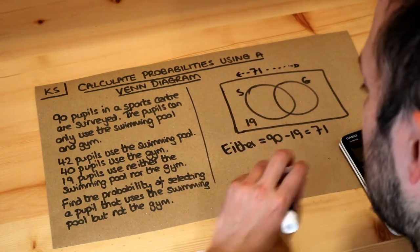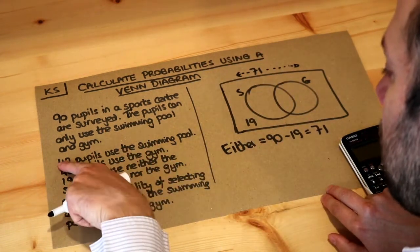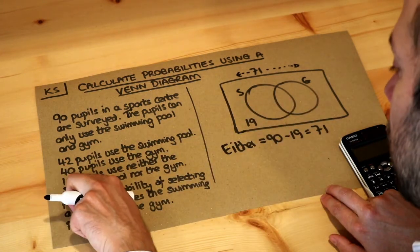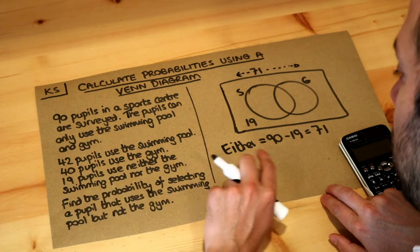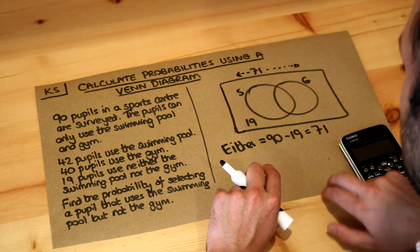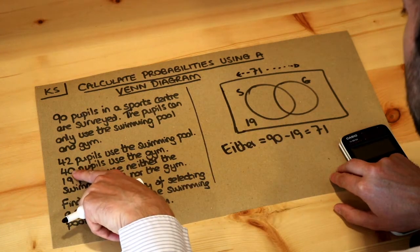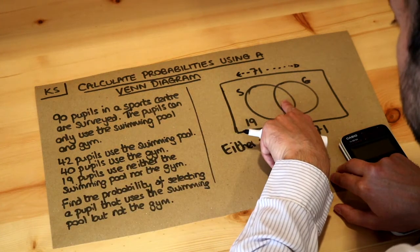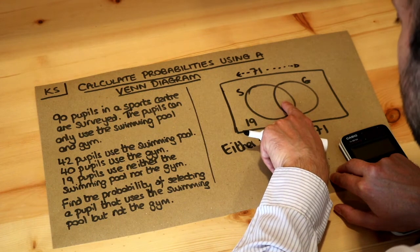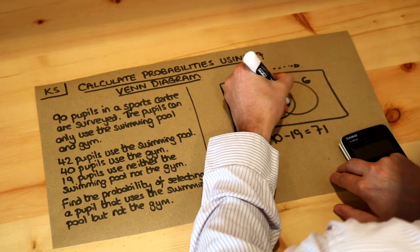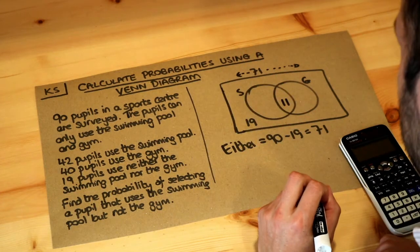Now the clever way to do this is if we add these two groups of people, the people who use the swimming pool or the gym, so 42 plus 40 is equal to 82. That's going to include that overlap twice. So we've got 82 students in total there, but we double counted the people in the middle. If we do 82 minus the 71 that gives you 11. So it must be that 11 students used both.